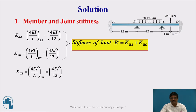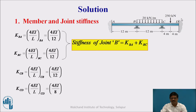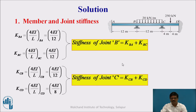For joint C, two members meet — CB and CD. The stiffness of CB is 4EI/L since the opposite end is continuous, and the stiffness of CD is also 4EI/L since it is fixed. The total of these two gives the stiffness of joint C. In this way we can calculate the stiffness of joints B and C.